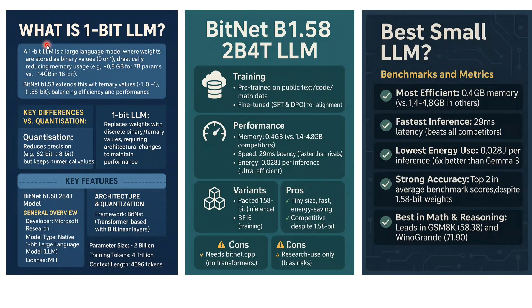It comes in multiple variants: 1.58-bit, floating point 16, and GGUF versions are also present. The pros are that it is very small in size, very fast, has low memory consumption, and benchmark numbers are good. The cons are that the GGUF version needs bitnet.cpp to run, though you can run the floating point version on a local system with minimal GPU. It is also research-use only, and being very small, there may be biases.